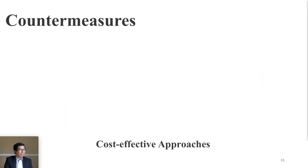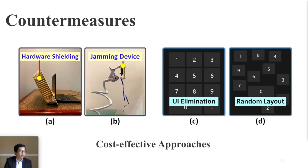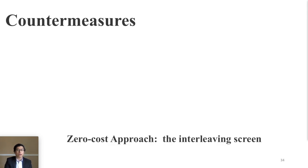After we got a sense about our attack performance, we also tried to do something to protect our users against this new side-channel attack. Here we propose two kinds of countermeasures. First, we call it cost-efficiency approach, which is mainly focused on hardware protection and user behavior protection. Second, we call it zero-cost approach, which is mainly from software protection.